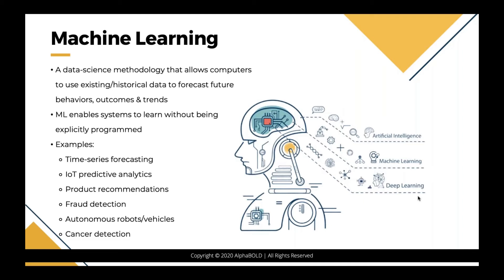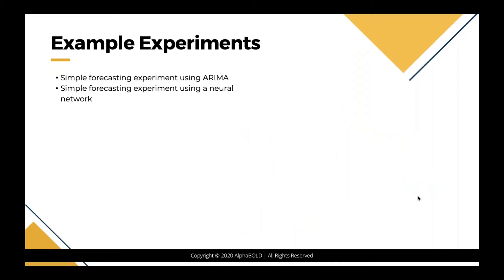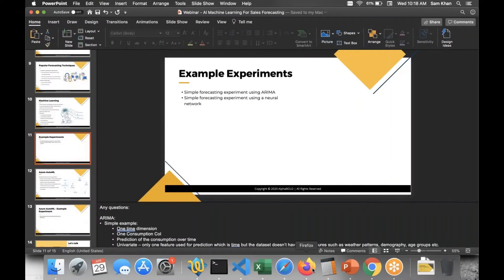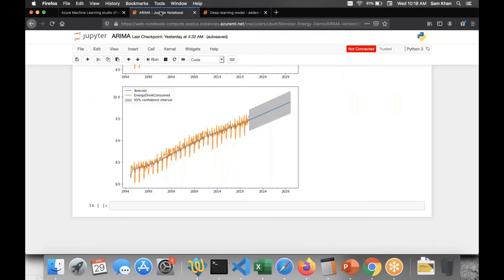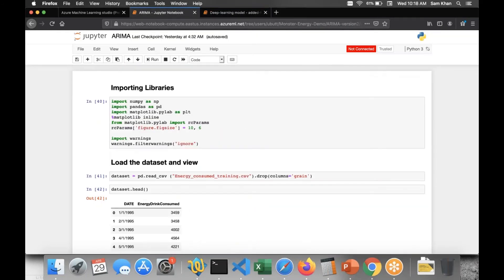Another example is cancer detection. AI is bringing massive improvements to healthcare. For lung cancer detection, machine learning achieved a 97% success rate in accurately detecting the disease, according to a study conducted by NVIDIA a couple of years back. Now I'm going to show a couple of experiments — but Judd, do you have any questions submitted so far? No questions right now from the audience, but I'll let you know as soon as we do.